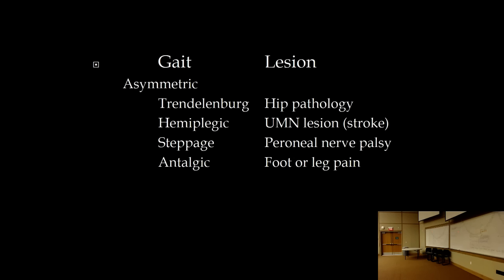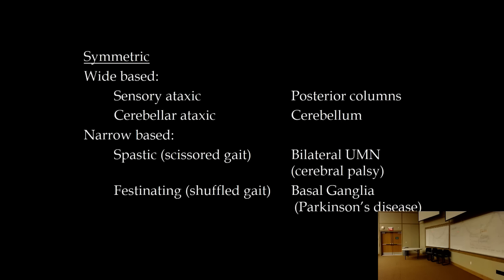Steppage gait occurs with foot drop. The peroneal nerve supplies the tibialis anterior, which dorsiflexes the foot. A peroneal nerve lesion causes loss of dorsiflexion — the foot flops down — so the patient must lift the leg higher to avoid tripping. This high-stepping pattern is called steppage gait. Antalgic gait is not neurologic — it is a limping gait caused by pain, such as from a sprained ankle or knee pain.